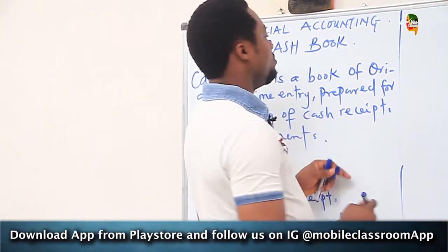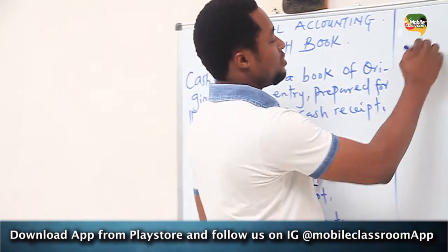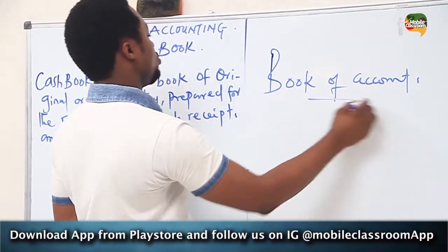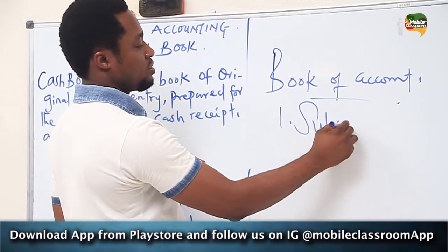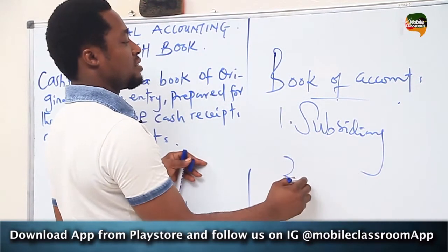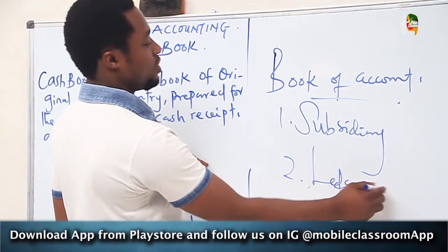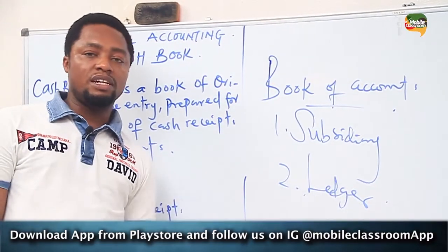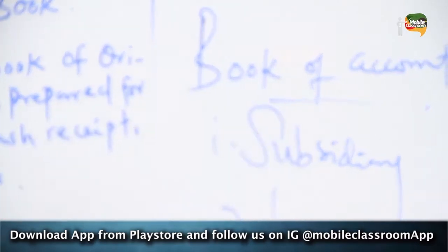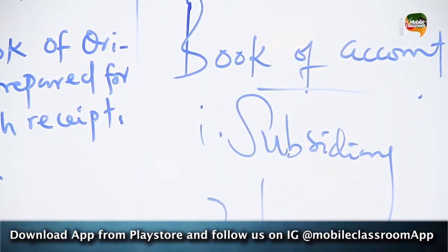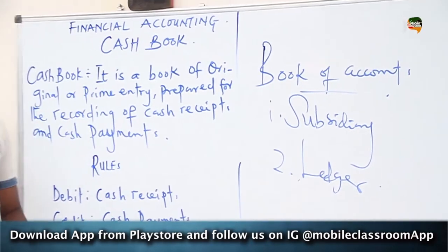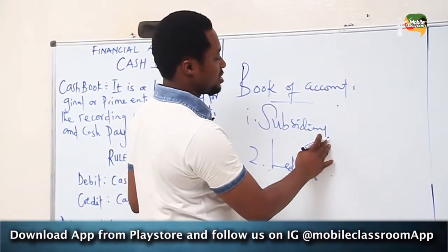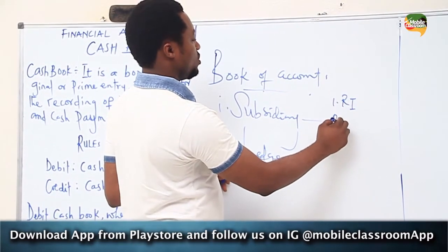Cash book is one of them, and they are all called books of accounts. Books of accounts are two: subsidiary books and the ledger. The subsidiary book is the book of first entry of transactions, and it is divided into six.